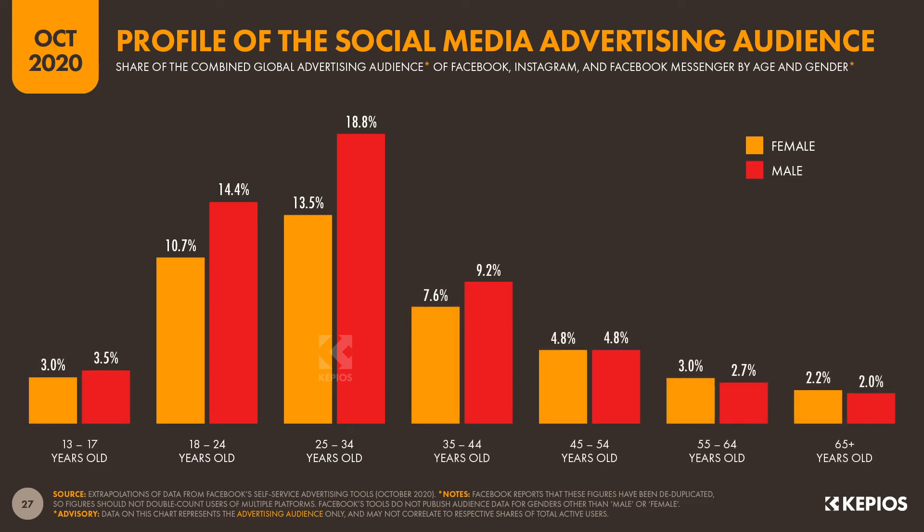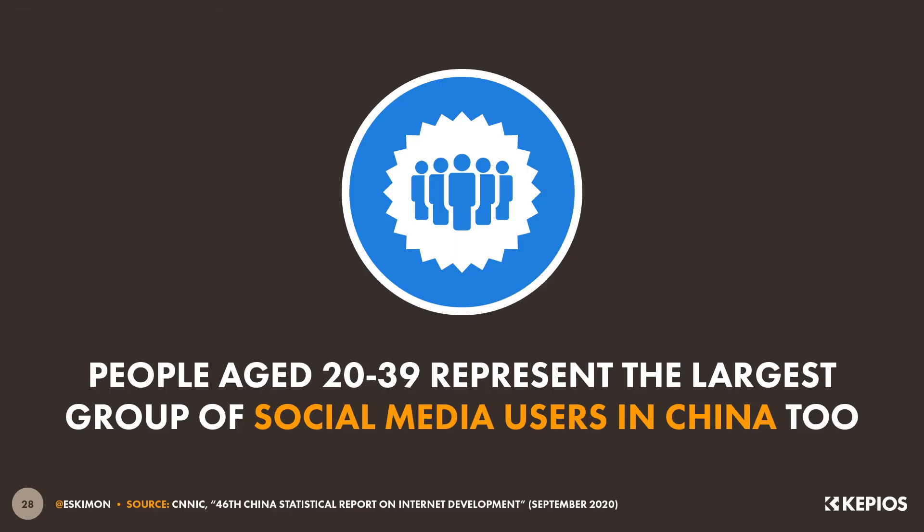Now, note that this advertising audience data doesn't cover all of these platforms' users — and in particular, it doesn't include users living in countries affected by US sanctions, and furthermore, it doesn't include a representative sample of social media users in China due to the reduced availability of these platforms within the country. However, the latest data from CNNIC shows that these younger groups also account for the largest share of China's 930 million social media users.